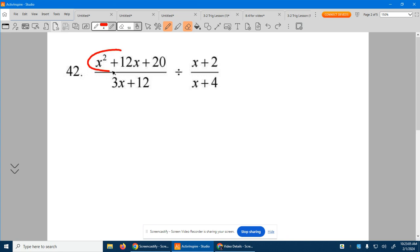So this top right here can break down. What multiplies together to give you 20, yet adds to give you 12? You should see x plus 2 and x plus 10, because 2 times 10 is 20, and 2 plus 10 is 12.